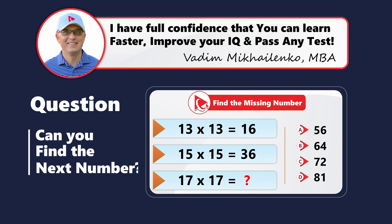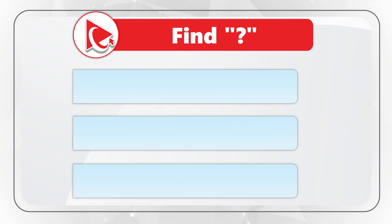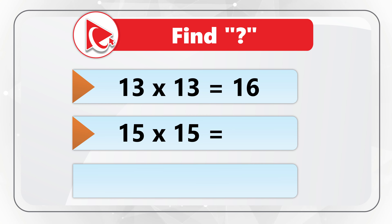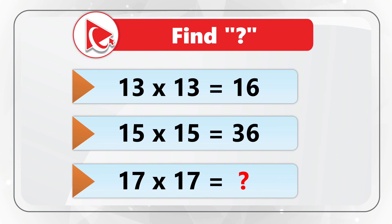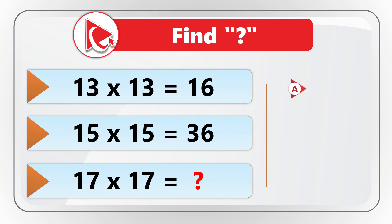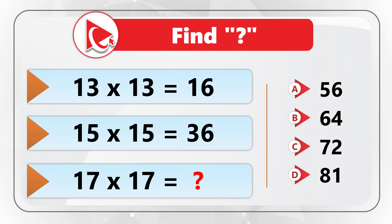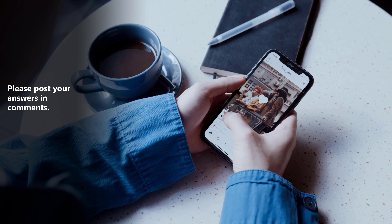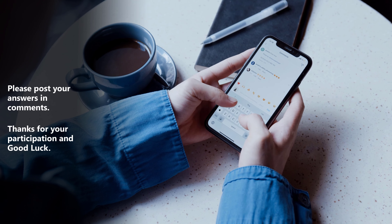Surprise! I have a problem for you to solve. You need to find the missing number, and you're presented with three expressions. First: 13 by 13 equals 16. Second: 15 by 15 equals 36. Last: 17 by 17 equals the missing number. Select the missing number from choices A: 56, B: 64, C: 72, or D: 81. Pause this video for 10 to 15 seconds to calculate the solution, then post your answer in comments. Thanks for participating and good luck.